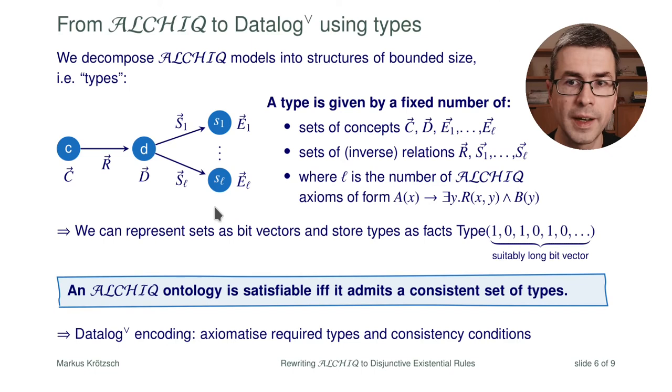There have to be enough types and necessary types have to exist. For example, for every part of the A-box, for every fact that we are given, there must be a suitable type in our model that describes the relationships that are in the A-box.